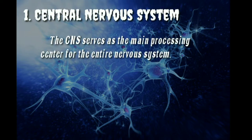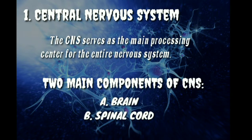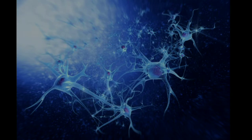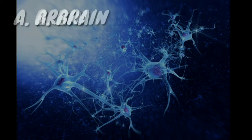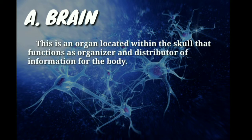The first major division is the central nervous system. It serves as the main processing center for the entire nervous system. The CNS consists of two main components: the brain and the spinal cord.